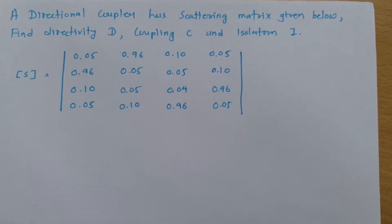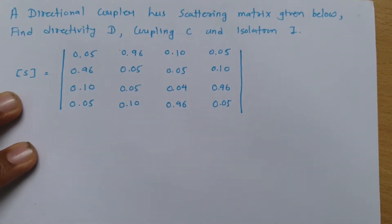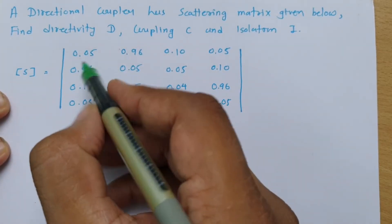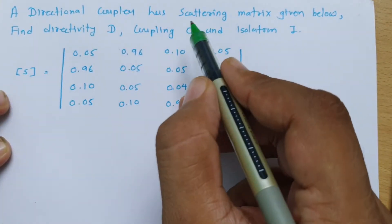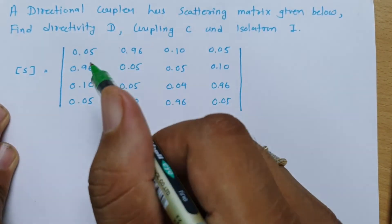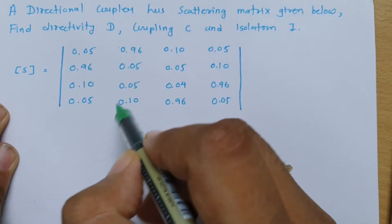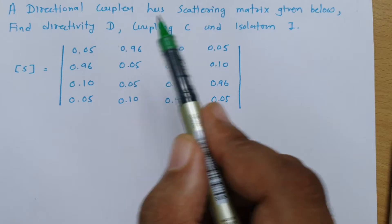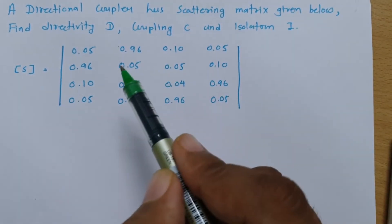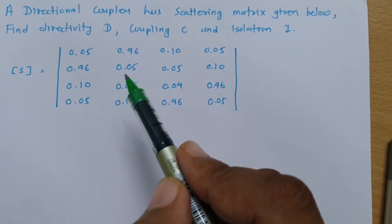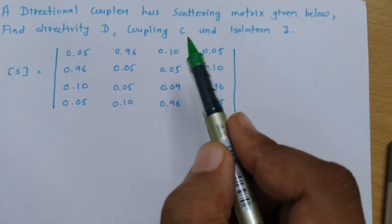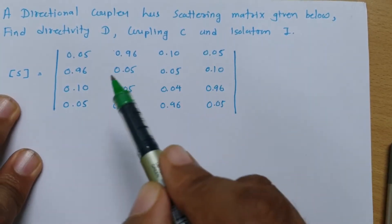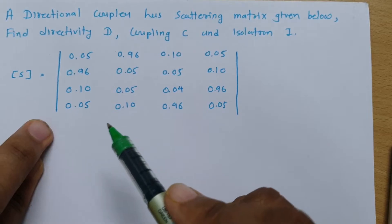Welcome to Microwave Engineering Playlist. Here in this session, I am going to explain an example on Directional Coupler. For this, we have a question where a Directional Coupler has a scattering matrix as given below, and we need to calculate directivity, coupling, and isolation of this directional coupler.